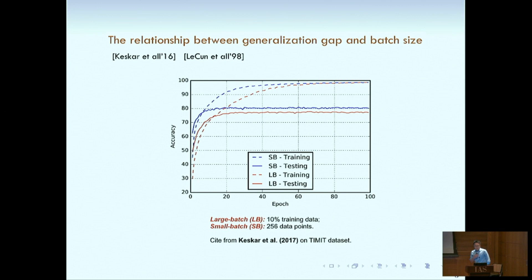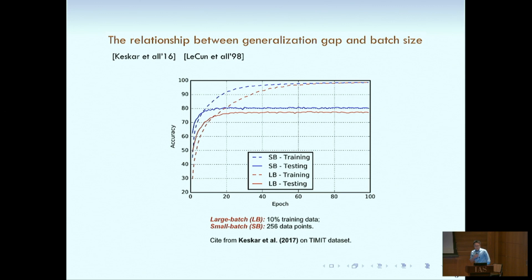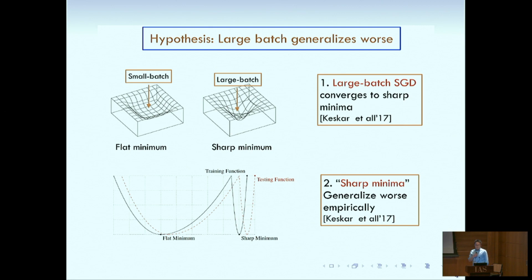Empirical works have shown that small batch is significantly better than large batch in terms of generalization. To explain the phenomenon, there are hypotheses to relate with the geometry of the landscape. In Keskar 2017, it says large batch will converge to the sharp minimum, and the sharp minimum generalize worse empirically. In this talk I will focus on the first part: is that true that larger batch will converge to sharp minimum?